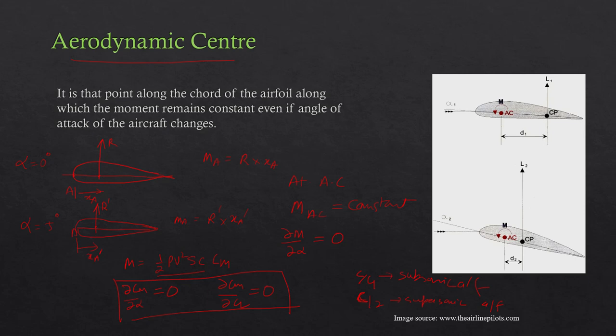The key advantage of the aerodynamic center is that it does not change its location as the angle of attack changes, whereas the center of pressure keeps changing its location as the angle of attack changes. So the definitions and the difference between these two concepts should now be clear. If you have any doubt, please write in the comment box. If you like this video, please subscribe to the channel and share it with your classmates.